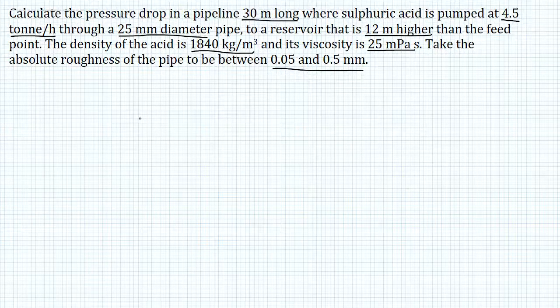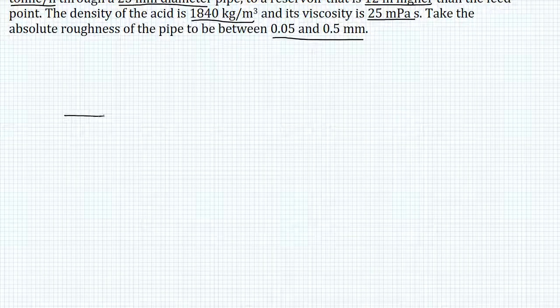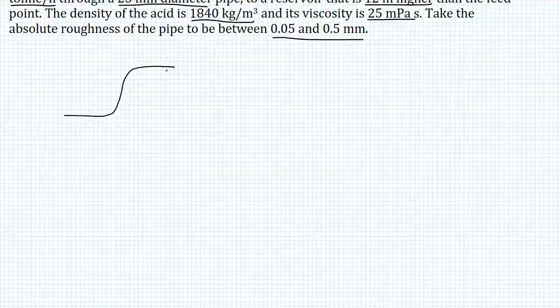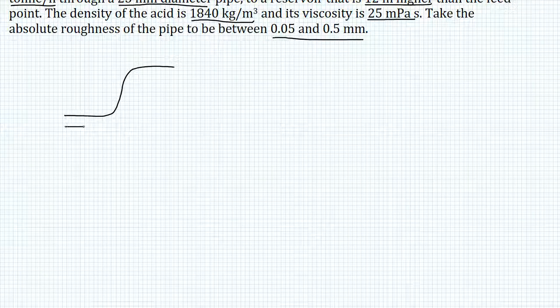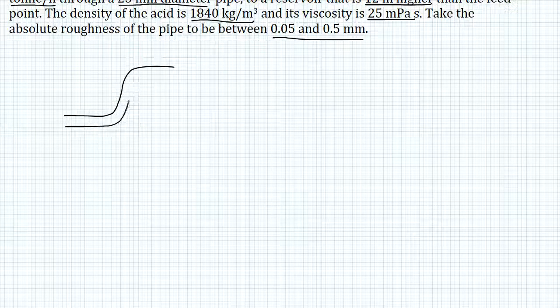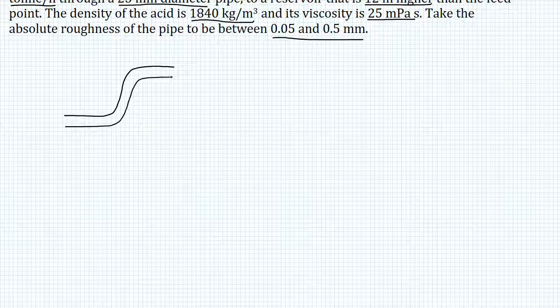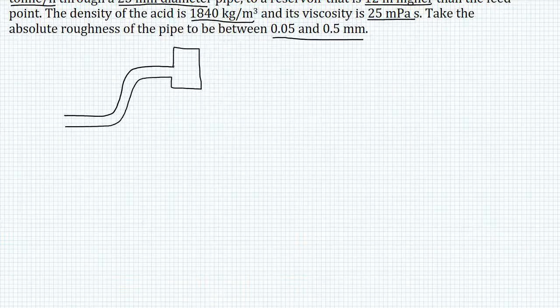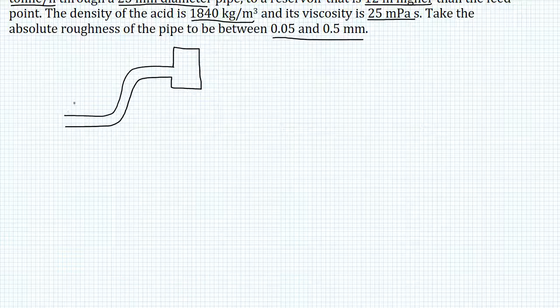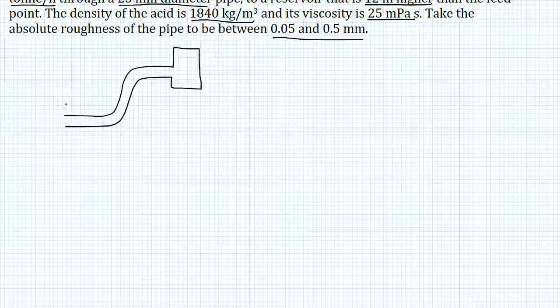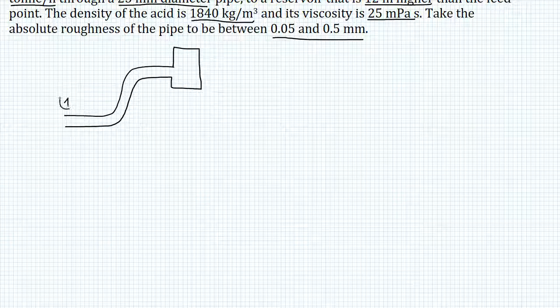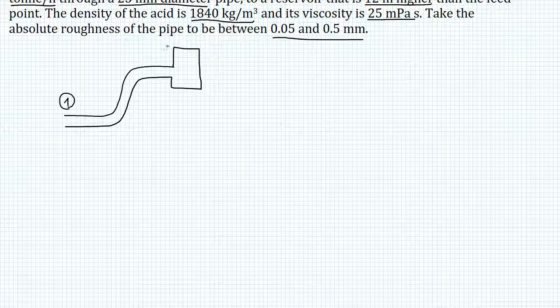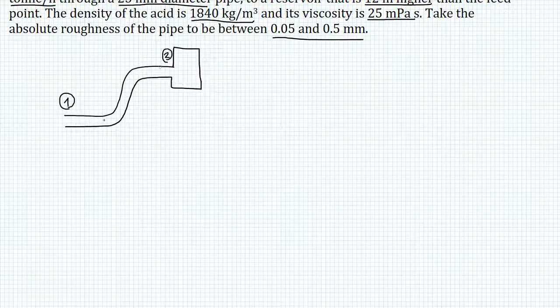So first things first, let me draw a little representation of the system we're working with. This is a pipeline that's 30 meters long, it starts at that feed point, and it reaches this reservoir at the end. It's important to label these two points, the crucial points for our problem, with numbers. We'll call the feed point 1, and we'll label the reservoir with 2.